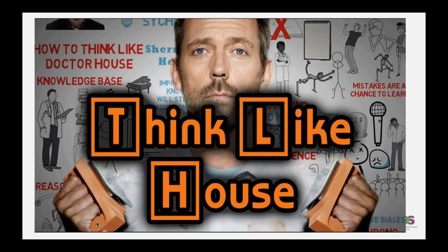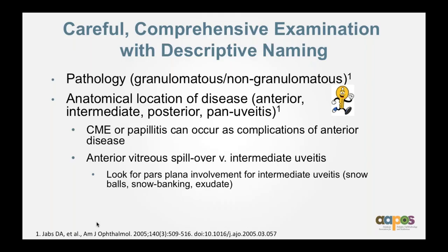Do they have a pet tarantula? Tarantula hairs cause keratial uveitis that can definitely stump us in the clinic. So you want to think like House — really put it all together. Evaluation requires a careful, comprehensive examination with descriptive naming. You want to highlight the pathology, the anatomic location of disease — anterior, intermediate, posterior, panuveitis. Some caveats: CME or papillitis can occur as complications of anterior or intermediate disease and may not be the primary location of the inflammation. Be aware of anterior vitreous spillover or iridocyclitis referred as intermediate uveitis.